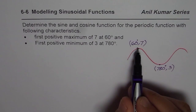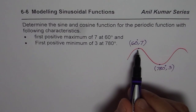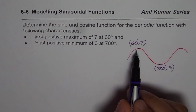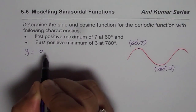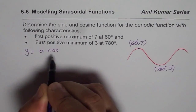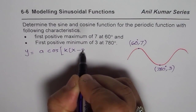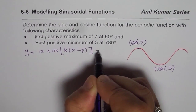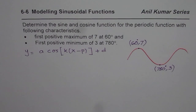Since we started with the maximum and that point is given to us, our preferred equation in this case should be cosine. So we will write the equation as y = a·cos(k(x − p)) + d. This is the form of equation I am going to explore.